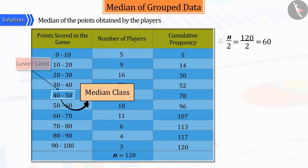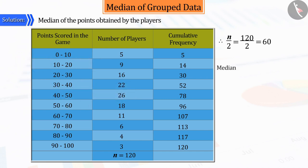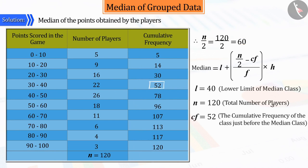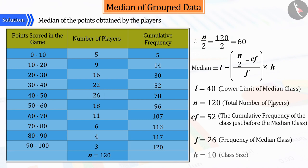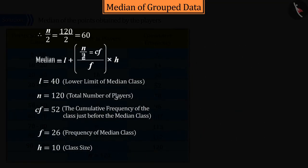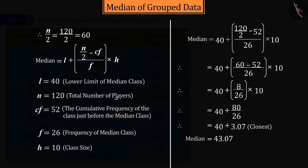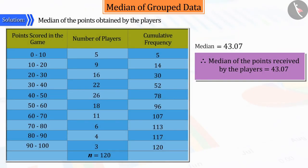Here, 40 is the lower limit and 50 is the upper limit of the median class. To obtain the median, we use the following formula: l plus n by 2 minus cf by f, multiplied by h. Where l is the lower limit of the median class, i.e., 40; n by 2 equals 60; cf is the cumulative frequency of the class immediately preceding the median class, i.e., 52; f is the frequency of the median class, i.e., 26; and h is the class width, i.e., 10. Substituting these in the formula and solving gives 43.07.